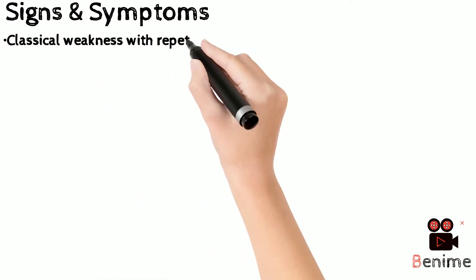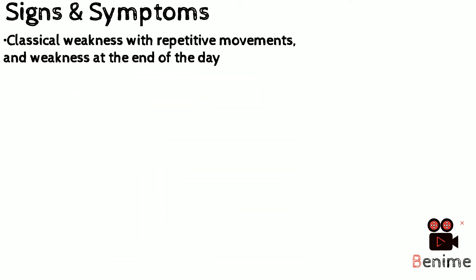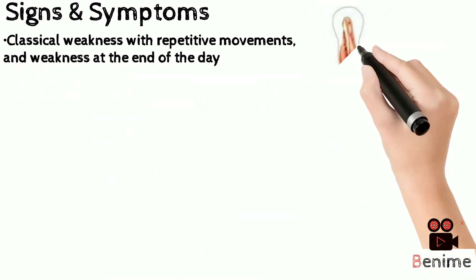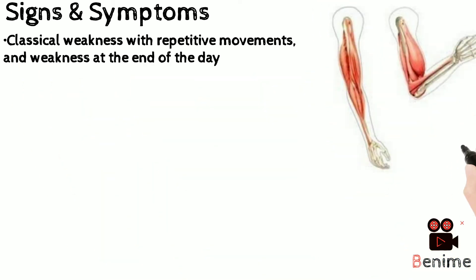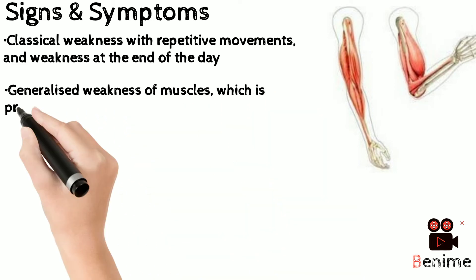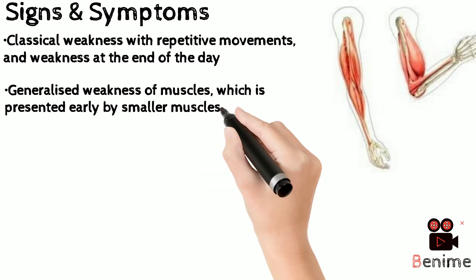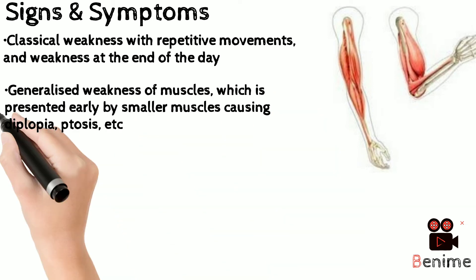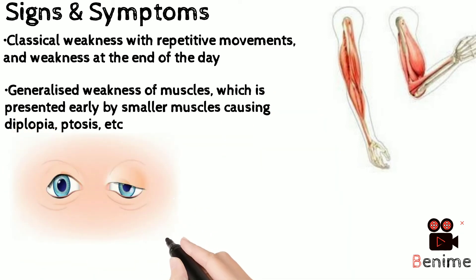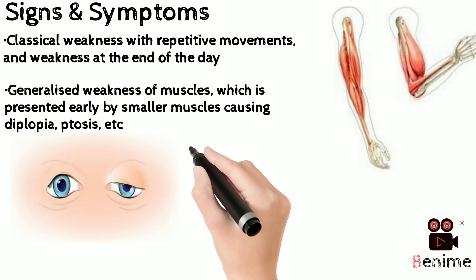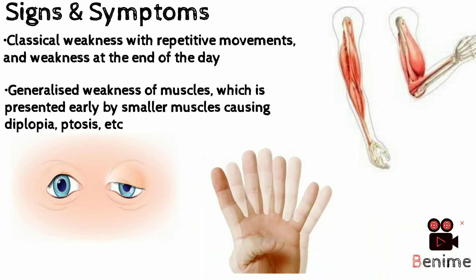Presentation of myasthenia gravis includes weakness with repetitive movements like chopping and chewing, and the classical weakness at the end of the day. Generalized weakness is presented early by smaller facial and ocular muscles, causing double vision and drooping of eyelids.